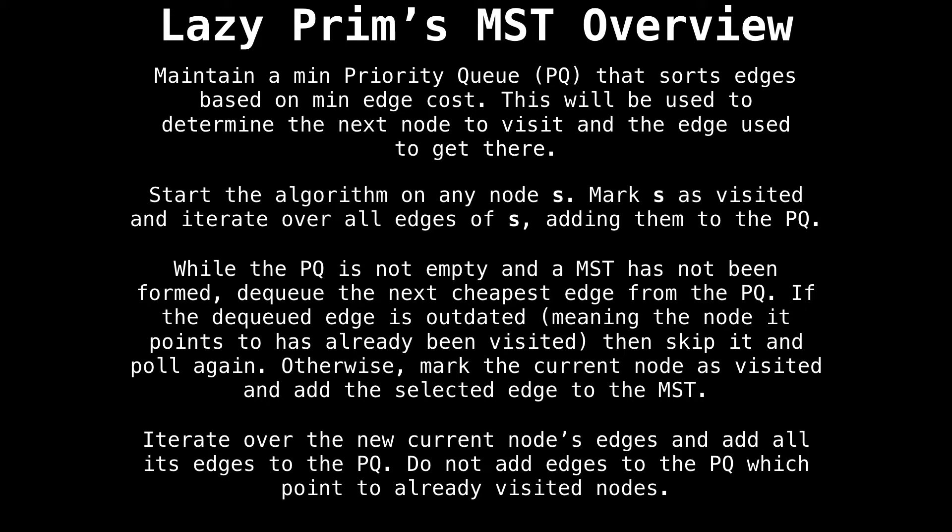From this point on, while the priority queue is not empty and a minimum spanning tree has not been formed, dequeue the next best edge from the priority queue. If the dequeued edge is not outdated, which it could be if we visit the node that edge points to via another path before getting to the edge we just pulled, then we want to mark the current node as visited and add the selected edge to the priority queue. If you selected a stale outdated edge, then you can simply pull again. Then repeat the process of iterating over the current node's edges, adding them to the priority queue. And while doing all this, take care not to add edges which already point to visited nodes. This will reduce the number of outdated edges in the priority queue.